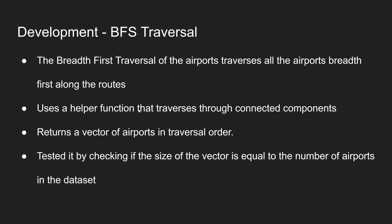For the BFS traversal, it traverses the airports in a breadth-first manner along the routes. There is a helper function — that is the breadth-first traversal in actuality. It starts at the first airport and goes breadth-first along the routes until it finishes a connected component.